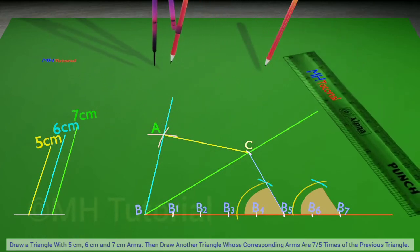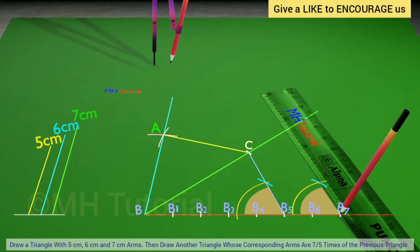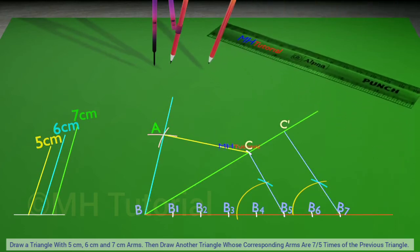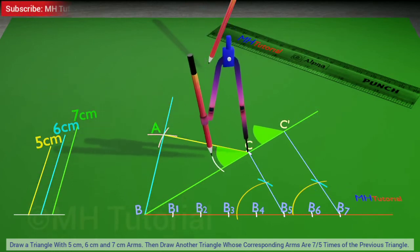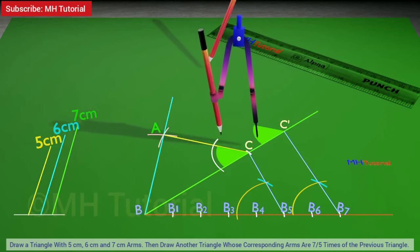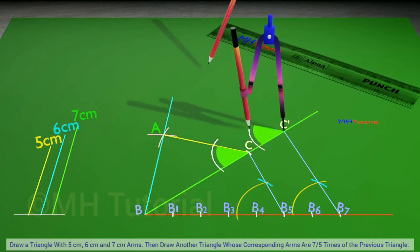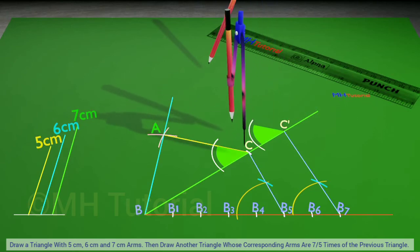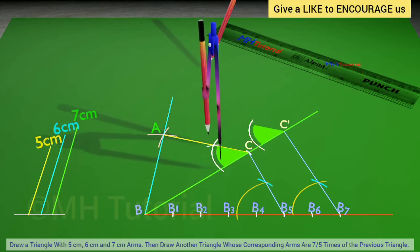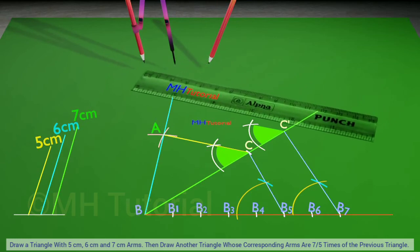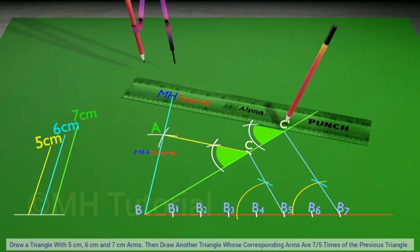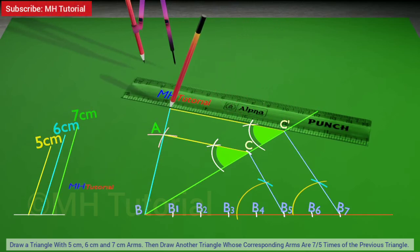The other arm of the constructed angle is drawn with a scale and a pencil. The other arm intersects the extended arm of BC at the point C dash. Now make an angle at point C dash which is similar and equal to that at point C. It is to be drawn just like before.